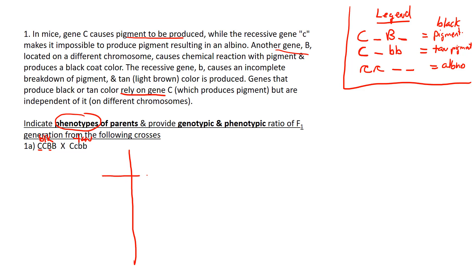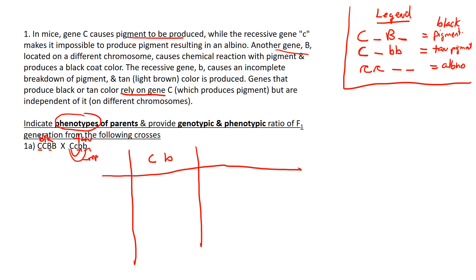Let's set up the dihybrid cross and determine the gametes using our folding system. Big C matched with little b — put that on top. Big C matched with the other little b — that's a repeat, so we don't show it; this saves lots of time. Take little c and match it with little b — that's also a repeat, don't show it. Do the same for the other parent, capital C capital B — you can see quickly everything else is a repeat. We've taken a 16-cell Punnett square and made it into two blocks.